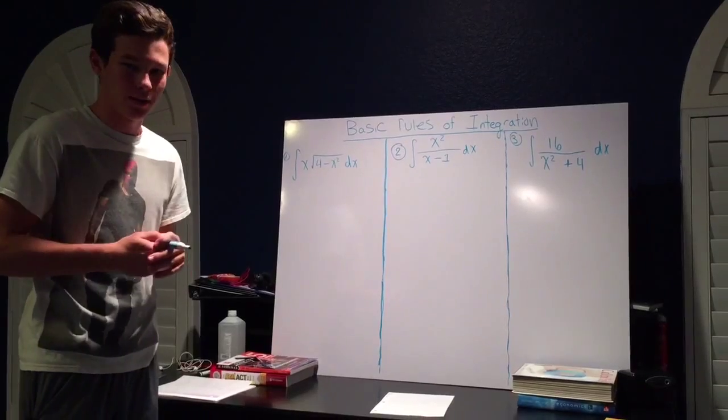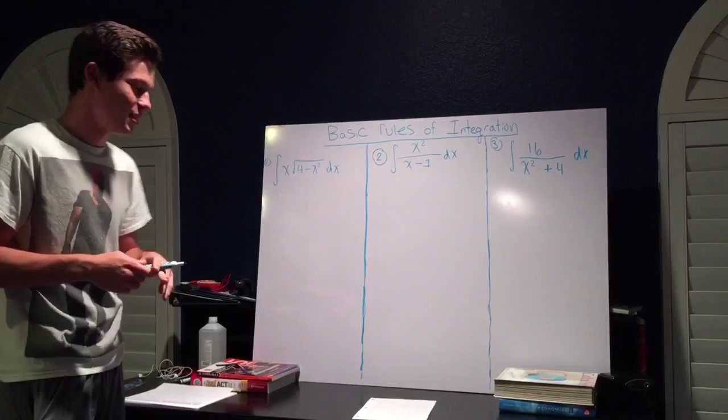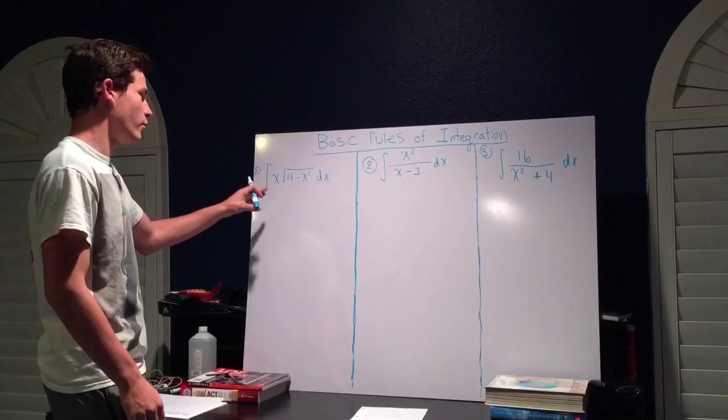Welcome. Today I'm going to do a brief demonstration of how to do basic goals of integration. We'll start off with our first example. We have the integral of x times radical 4 minus x squared dx.